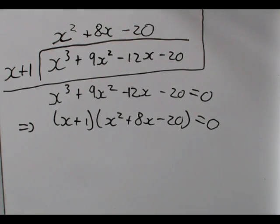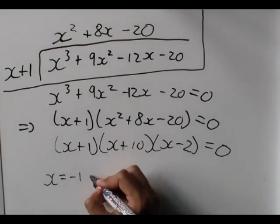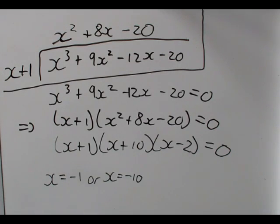So, just to complete the factorization, we're going to have to factorize this last bracket. So, this factorized gives me x plus 1, x plus 10, x minus 2 is all equal to 0. And now, we have our solutions. We have our solutions of x is equal to minus 1, or x is equal to minus 10, or x is equal to 2.